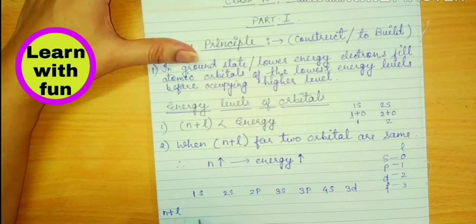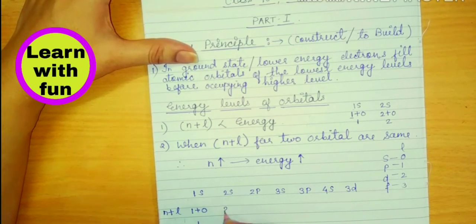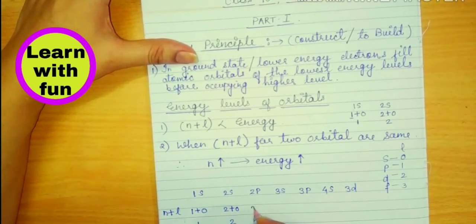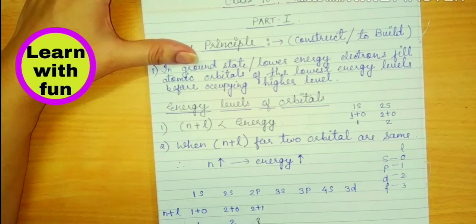Here 1, 1 will remain. Plus S value 0, the value is 1. 2 plus S value 0, value is 2. 2 plus P value 1, value is 3.